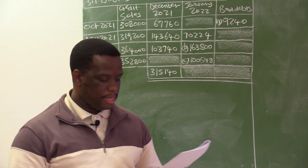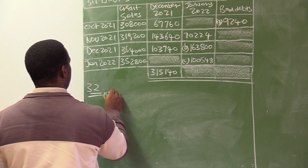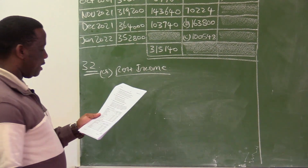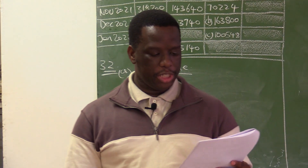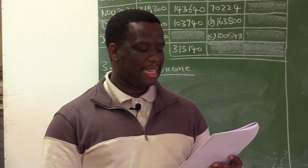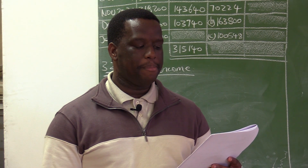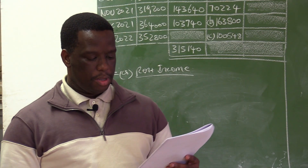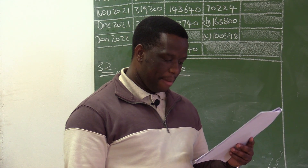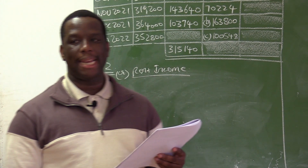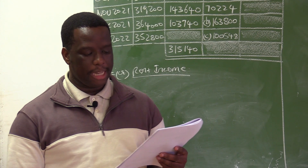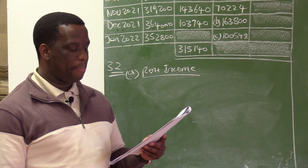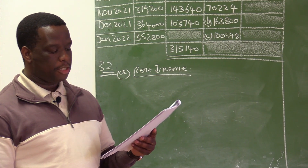We need to calculate A, which is rent income. Specifically, rent income for December. Information E tells us that rent income will be increased by 9% per annum effective from 1 January 2022. So we are required to calculate rent income for December, but the January figure already includes the 9% increase. A certain amount in December was multiplied by 109 over 100 to get the January amount.